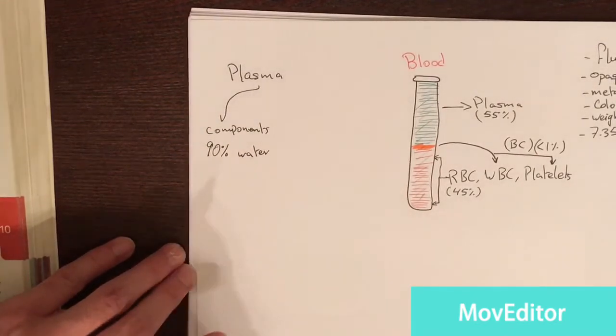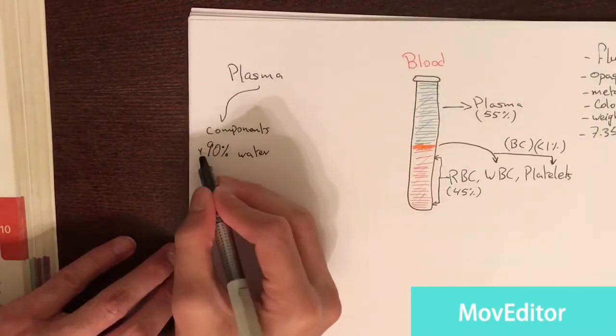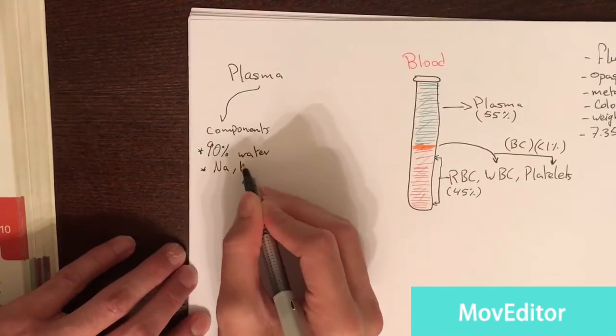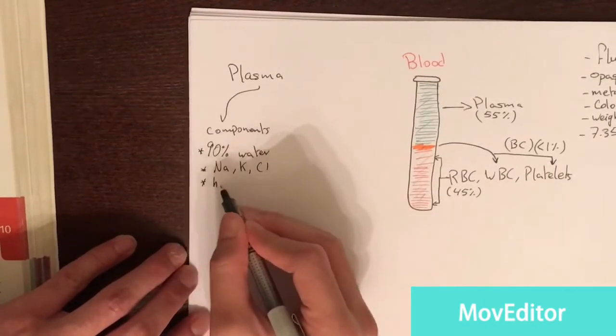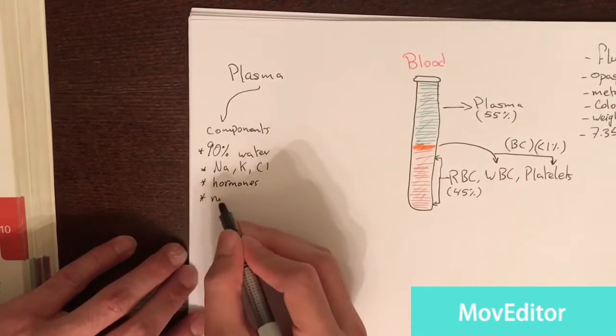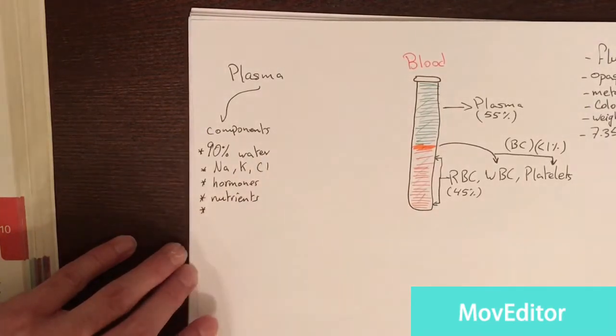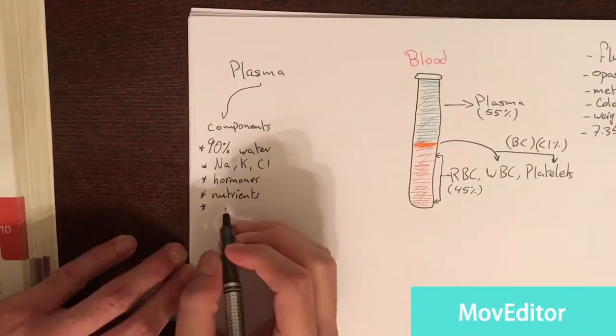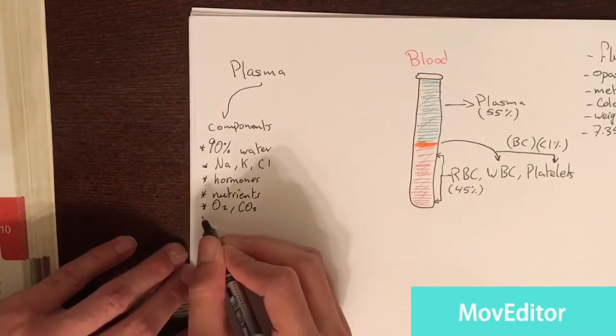Now, since it's a solvent, there will be many solutes or things that are dissolved in it. What are they? You have many salts or electrolytes. Those things are sodium, potassium, chloride. You have hormones that are inside the plasma. And you have nutrients, also waste products. Nutrients, it takes the nutrients towards cells and removes the waste products from the cells. And you have gases such as oxygen, carbon dioxide, for gases of exchange.